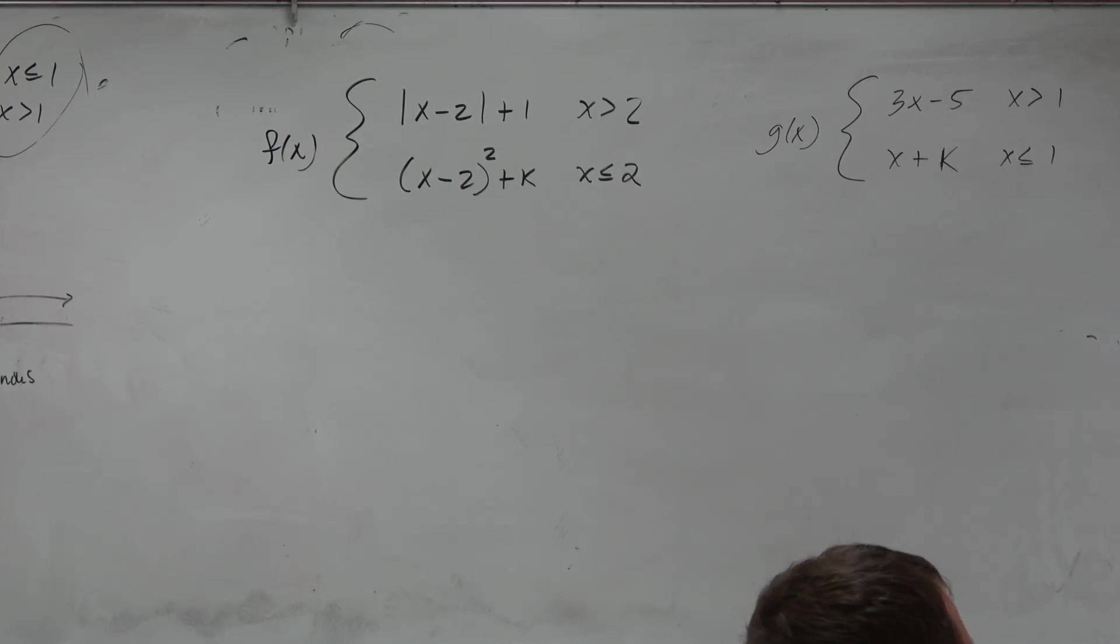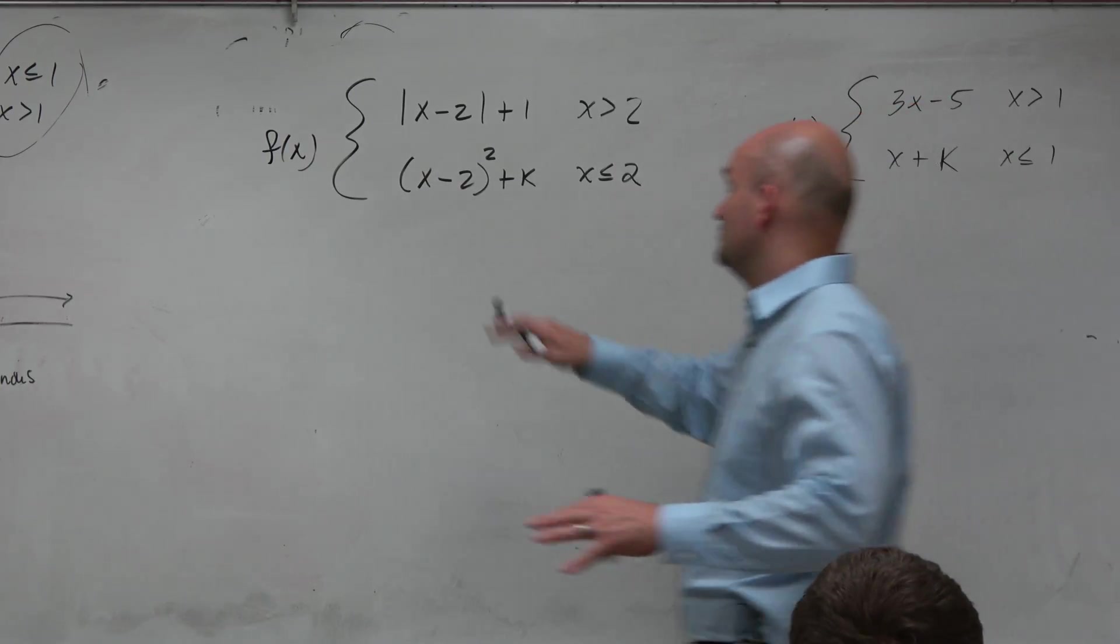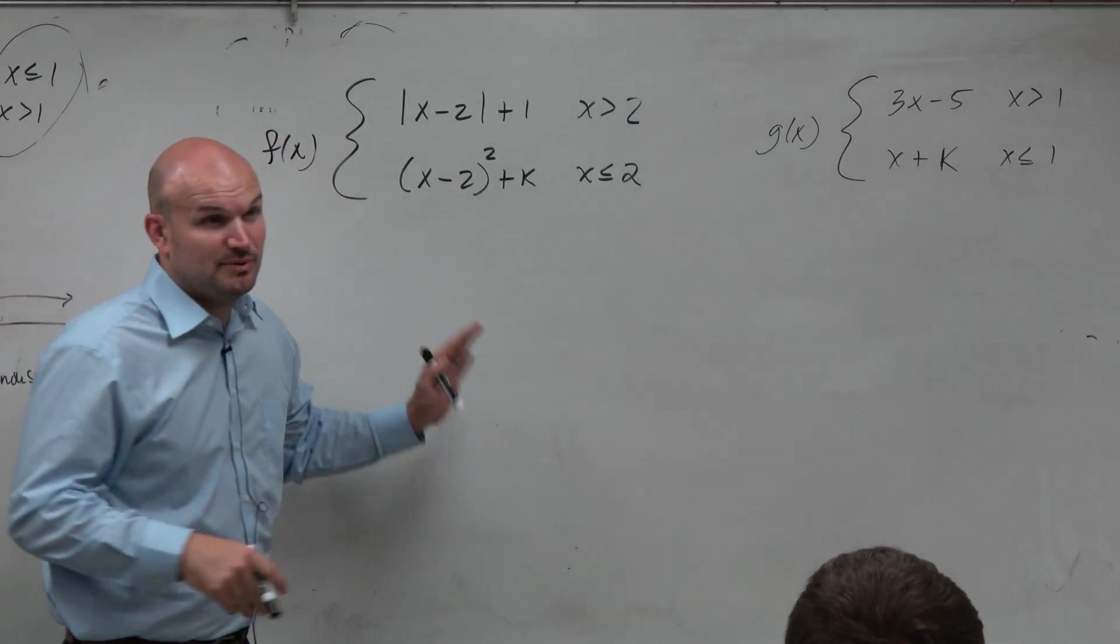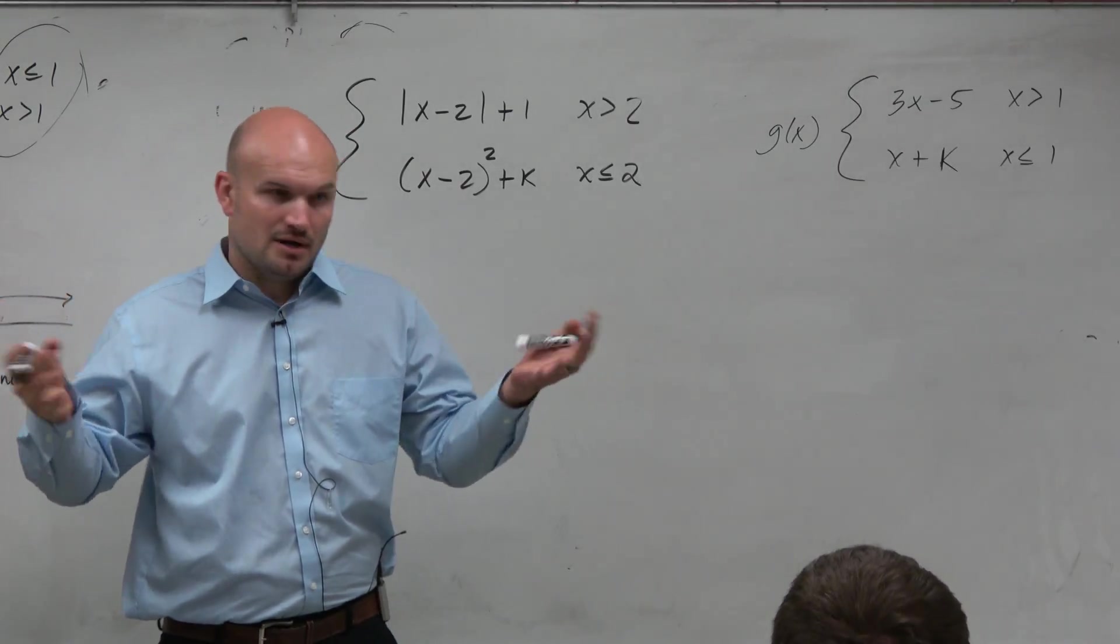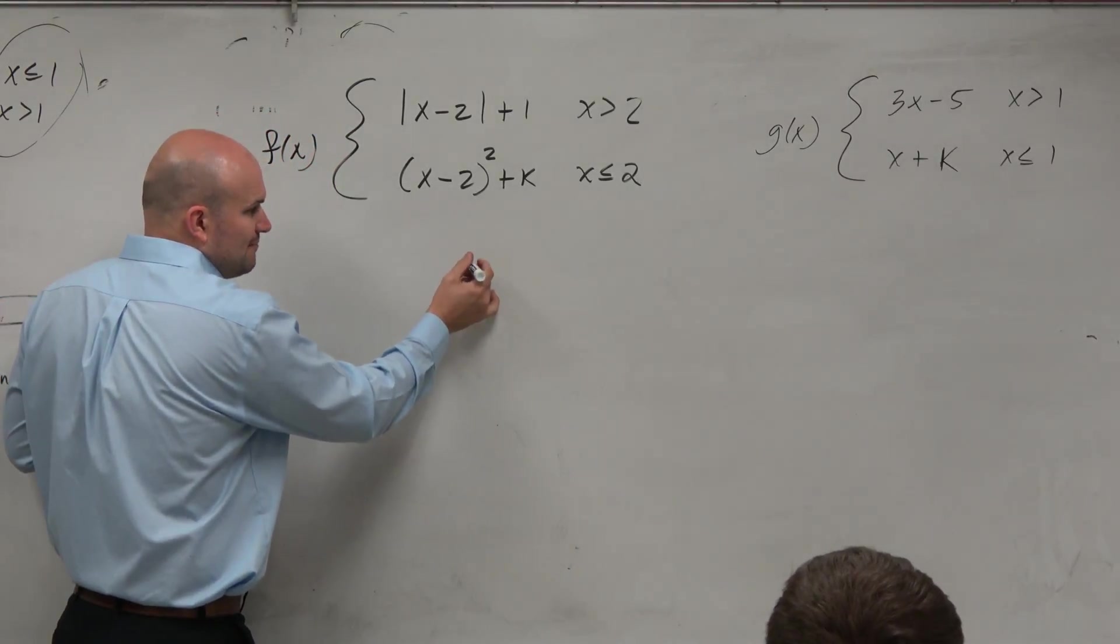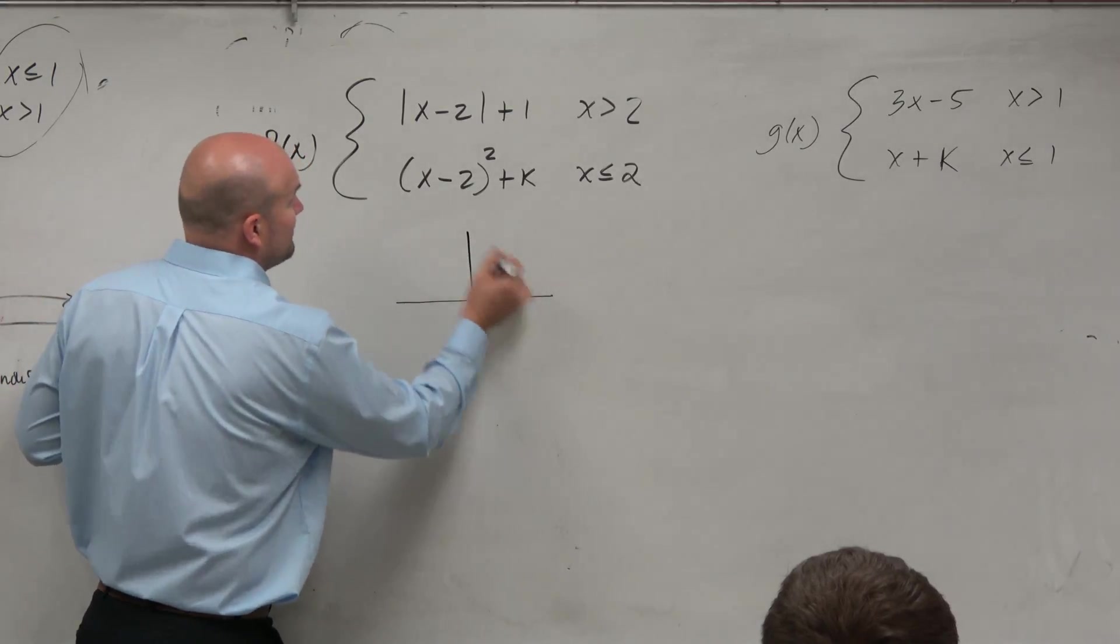So let's think about this. We have a graph, absolute value of x minus 2 plus 1. Can we graph that? All right, so if the problem's not making sense to me, I'm going to at least graph what I know.